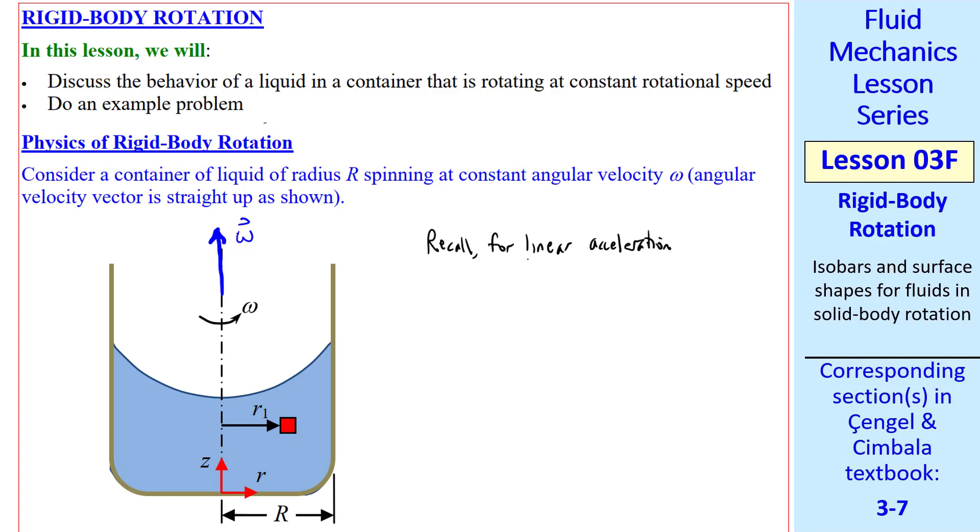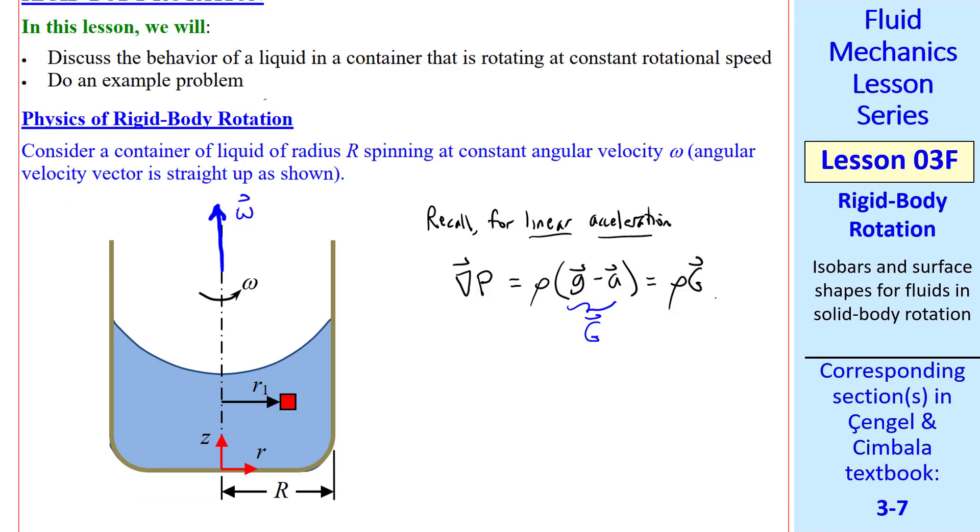From the previous lesson for linear acceleration, we had this equation: gradient of p equal rho times gravity vector minus acceleration vector. And we called this a modified gravity vector, capital G. So gradient p is rho times capital G vector.